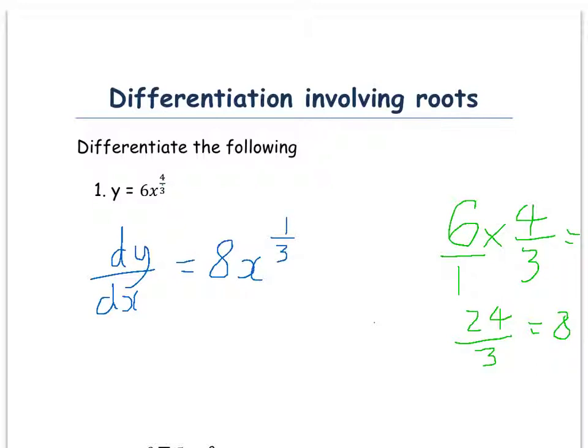Now, to finish this off, let's just rewrite, instead of leaving this as x to the power of a third, let's rewrite this as a root. Now, 1 over 3 means the third root of x, so it's the cube root of x.